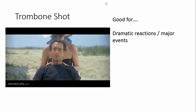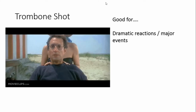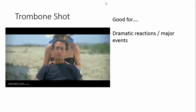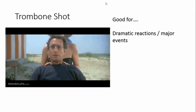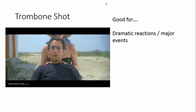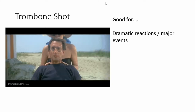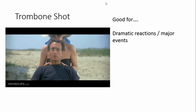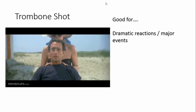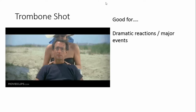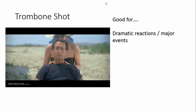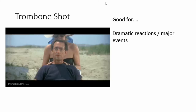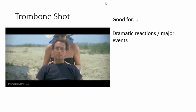A trombone shot — also called a dolly zoom — is done by zooming out while tracking the camera in, or tracking out while zooming in. It creates an effect where the background appears to move away from the person. This is from the film Jaws, and it's the moment the town sheriff realizes there is a shark in the water. The trombone shot is often used for major dramatic reactions or significant events, suddenly focusing attention on a person in a very dramatic way.